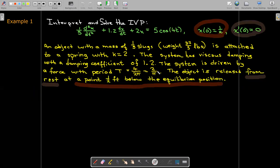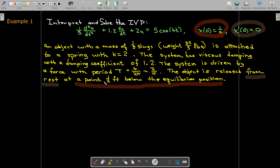And the initial conditions tell us that the object is released from rest. That's where we see that the initial velocity is zero, and it's at a point one-half foot below the equilibrium position. Remember, in this system, down is positive. So if it's a positive one-half, it means a positive one-half below the equilibrium position.